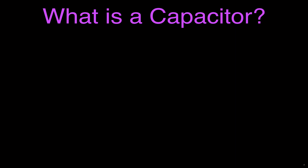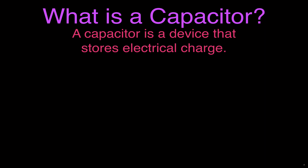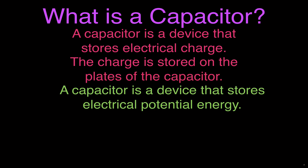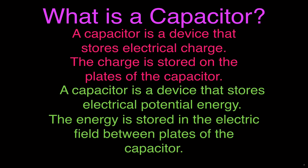What is a capacitor? A capacitor is simply a passive electronic device that stores electrical charge. There are kind of two ways you can think about it: you can think about it as storing electrical charge, and you can also think about it as a device that stores electric potential energy. The charge is stored on the plates of the capacitor, and that energy is stored in the electric field between the plates. So capacitors do two things — they store charge and they store energy.